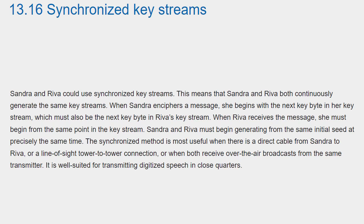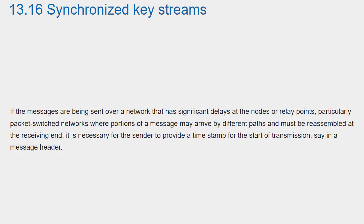The synchronized method is most useful when there is a direct cable from Sandra to Reva, or a line-of-sight tower-to-tower connection, or when both receive over-the-air broadcasts from the same transmitter. It is well suited for transmitting digitized speech in close quarters. If the messages are being sent over a network that has significant delays at the nodes or relay points — particularly packet-switched networks where portions of a message may arrive by different paths and must be reassembled at the receiving end — it is necessary for the sender to provide a time stamp for the start of transmission, say in a message header.